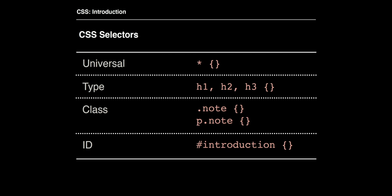Here are some CSS selectors. There is a universal selector using the star symbol. There are type selectors like H1, H2, and H3. There are class selectors — you reference a class from HTML by putting a period and then the name of the class. You can also be specific, like finding P elements that have a class 'note' associated to them. For IDs, you use the hash/number sign and then the name of that ID from your HTML to apply styles to it.